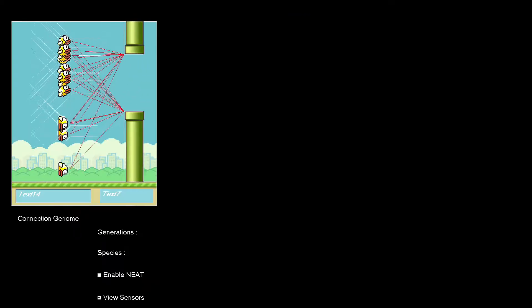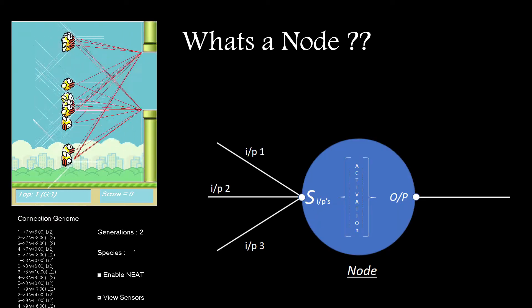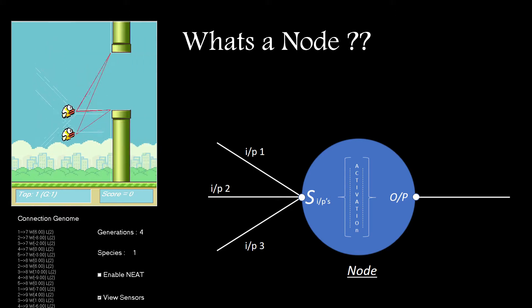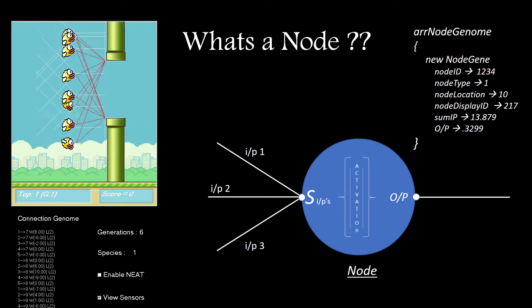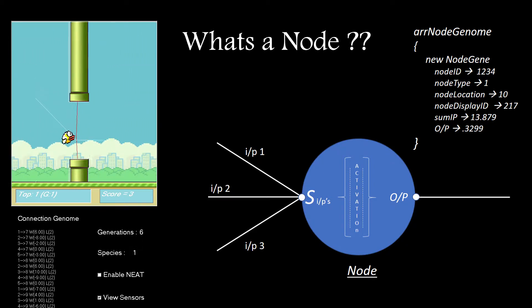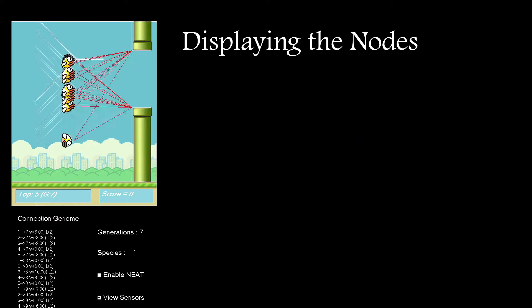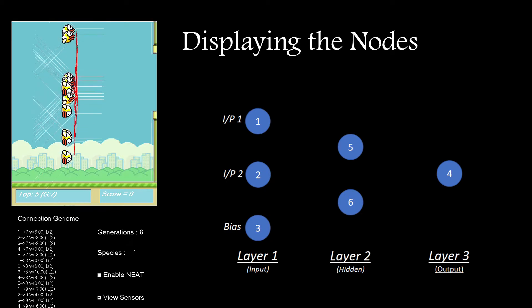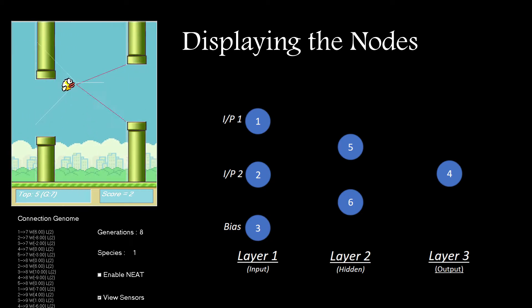Next up, coding a standard neural net. First thing needed was a node. That looks like a node. It has inputs, an output, and an activation function. We need to know a few additional things about our nodes, namely the node type — so whether it's an input, hidden, or output node — and the node location, so which layer it's in. Setting up three variables to capture our input nodes, hidden nodes, and output nodes, it's a simple matter of populating an array with those nodes and displaying them on screen.